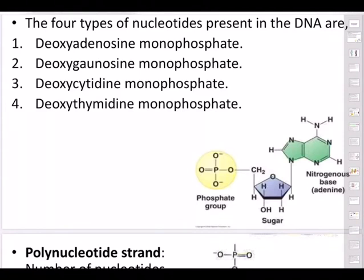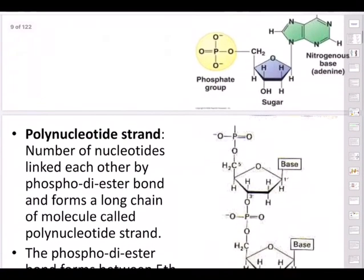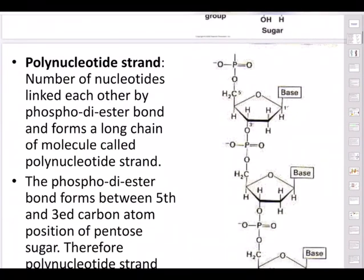The nitrogenous base — whether purine or pyrimidine — always attaches to the first carbon (C1) of the pentose sugar, and the phosphate group is attached to the fifth carbon of the sugar. Since DNA is a polynucleotide, nucleotides are added one after another to form one strand of a ladder; similarly a second strand is made, giving a two-stranded ladder structure.